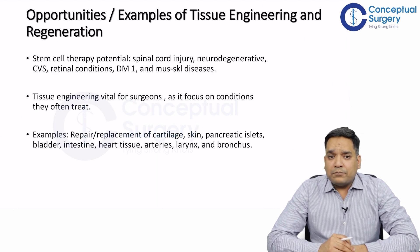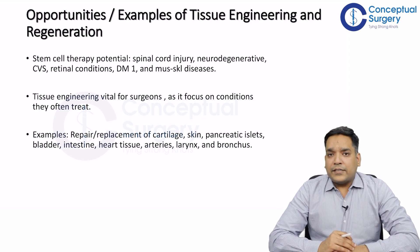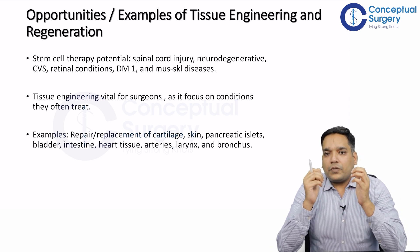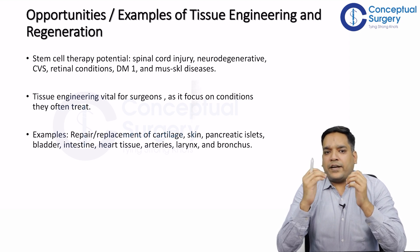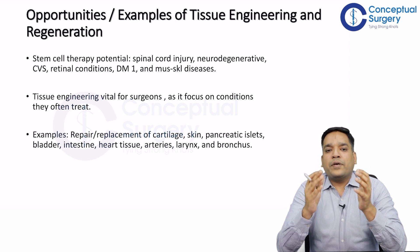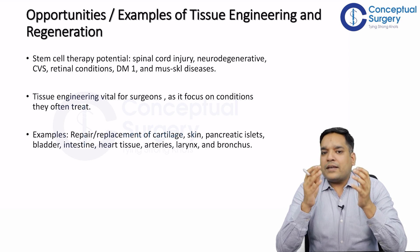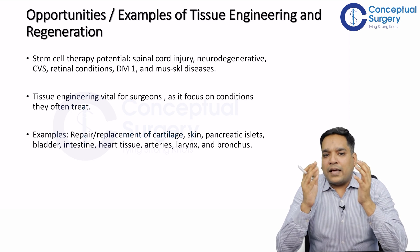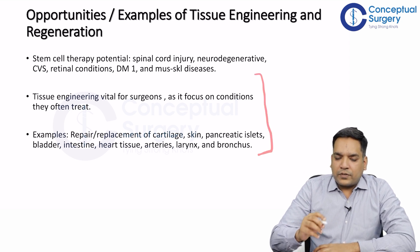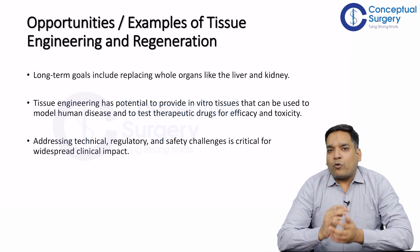Now the theory: stem cell therapy has potential in treating spinal cord injury, neurodegenerative disorders, cardiovascular diseases, retinal conditions, type 1 diabetes mellitus, and musculoskeletal diseases. Tissue engineering is very important for surgeons because it focuses on the same conditions that surgeons treat. Examples include repair and replacement of cartilage, skin, pancreatic tissue, eyelid tissue, bladder, intestine, heart tissue, arteries, larynx and bronchus. There is a wide scope of tissue engineering and regeneration in the surgical field.